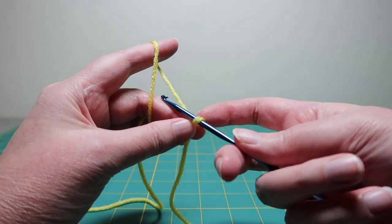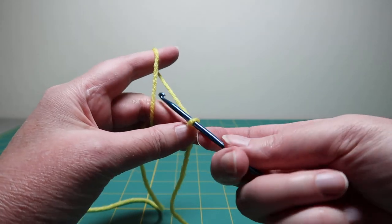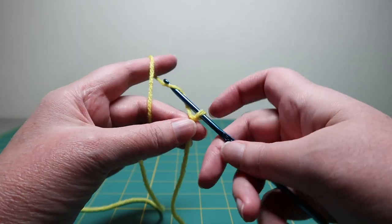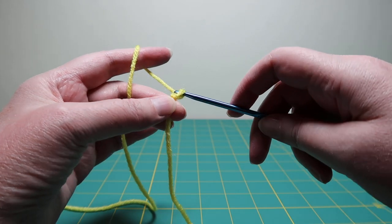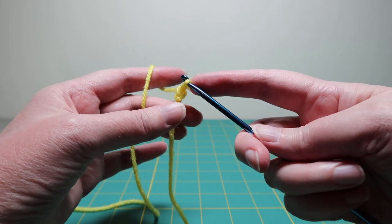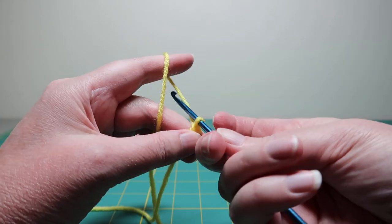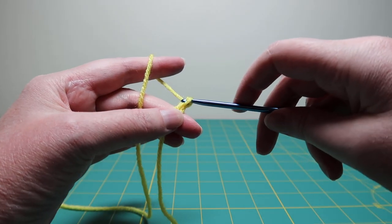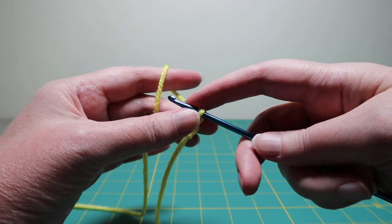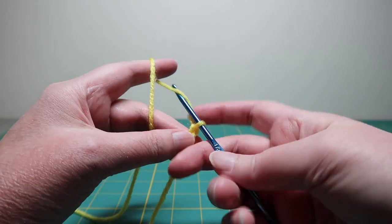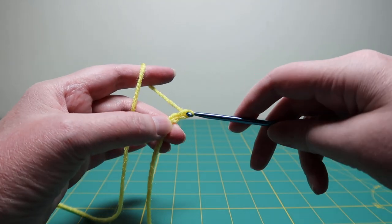And to do a chain stitch, you yarn over and pull through the loop. And you just keep doing that. Yarn over, pull through the loop. Yarn over, pull through the loop.